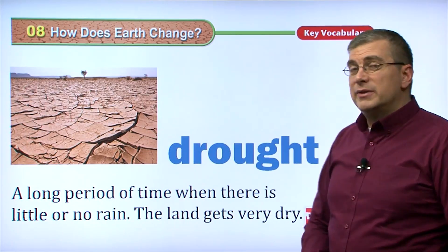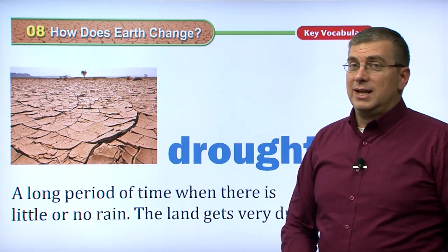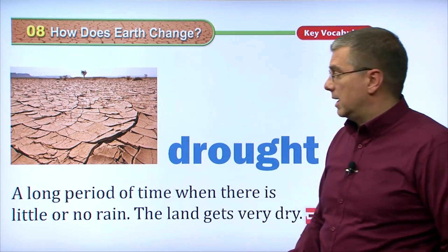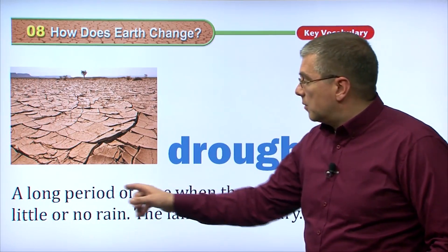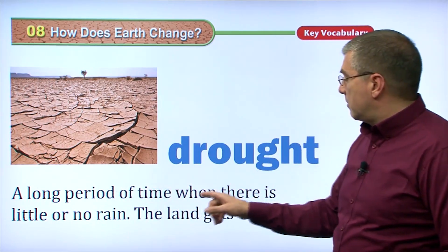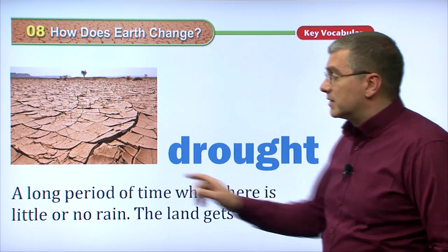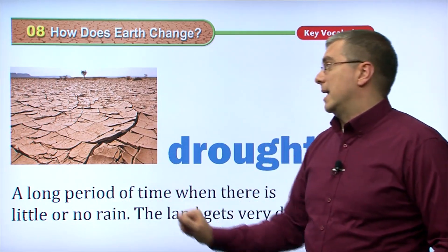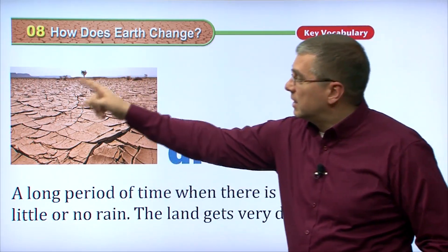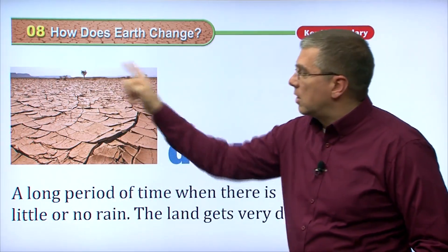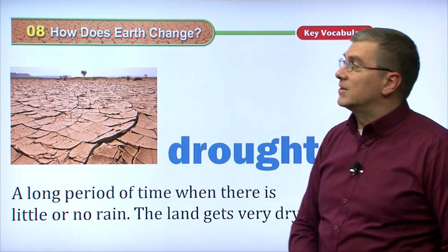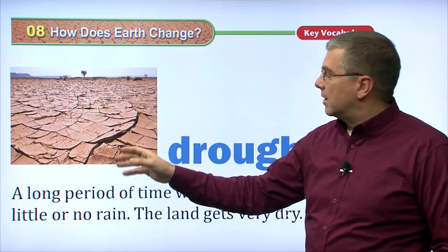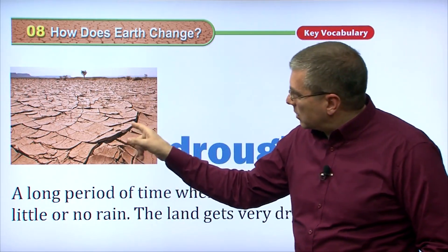Now, the opposite of a flood is when it doesn't rain at all — a long period of time when there is little or no rain. As you can see in the picture, we call this, of course, a desert. There's little or no rain here, and you can see the ground.